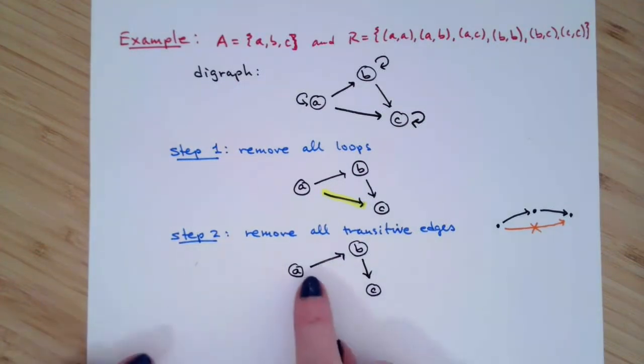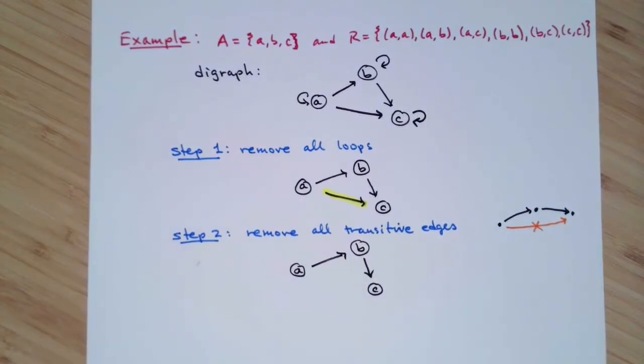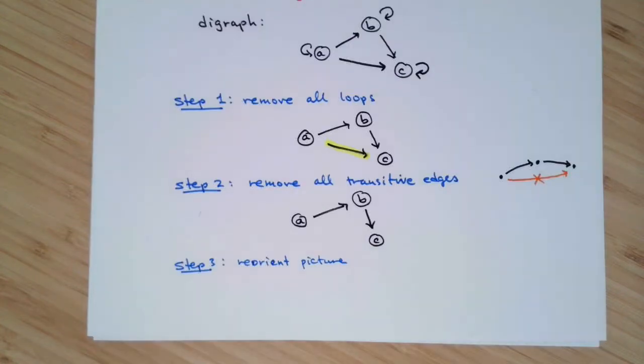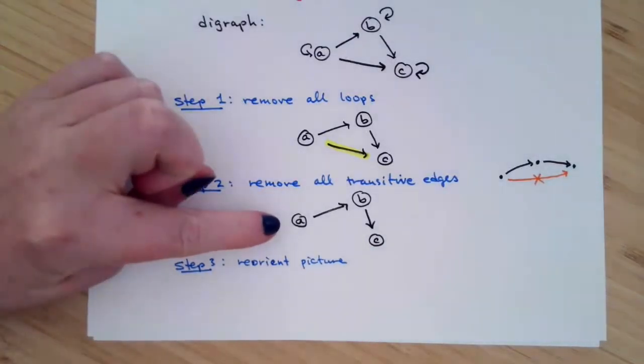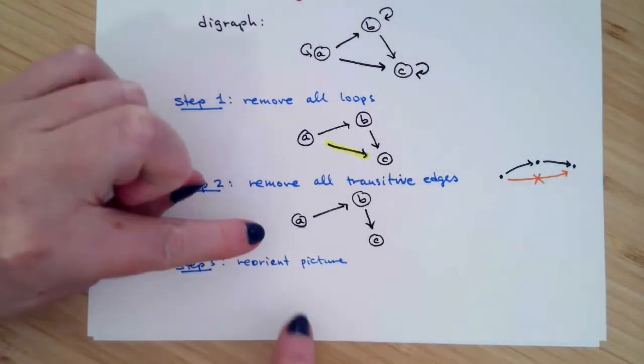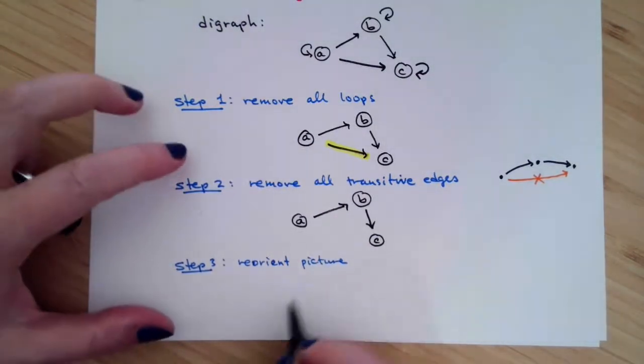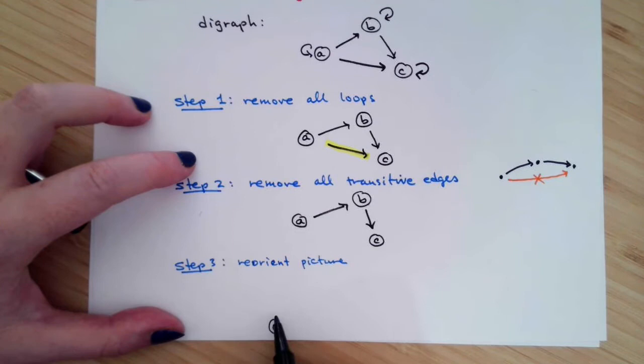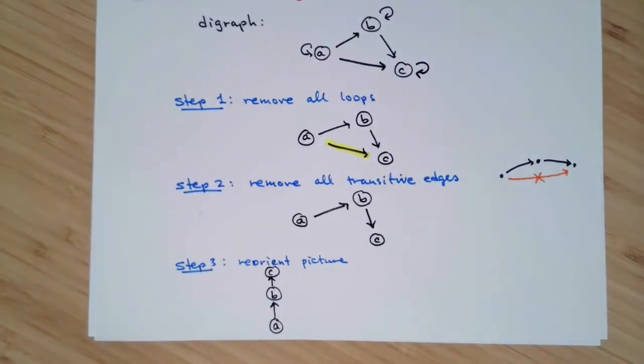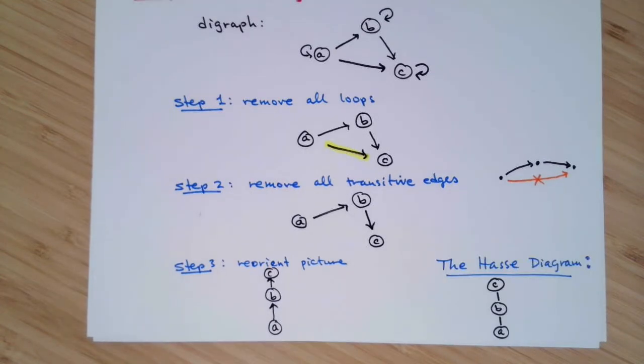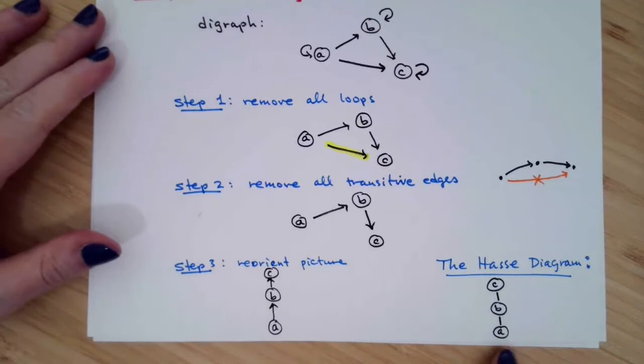Then the next step is we're going to reorient the vertices so that all of the arrows are pointing either directly up or at an upward orientation. Now for this particular graph, the only way to make the arrows point upward is to sort of unbend this guy. The lowest vertex that we're going to end up having here is A, and then pointing straight up we'll get to vertex B, and then pointing straight up we'll get to vertex C.